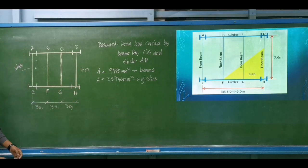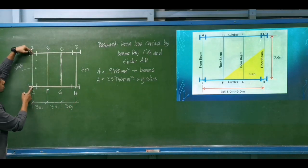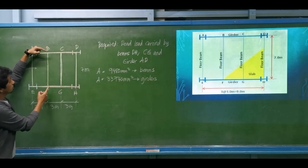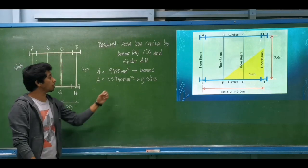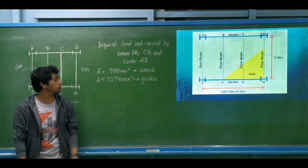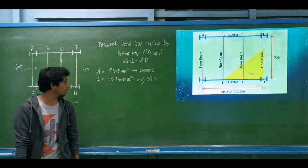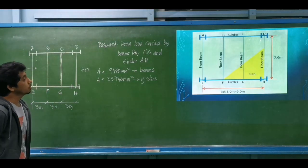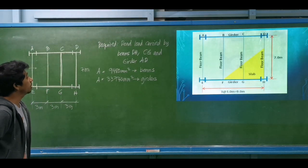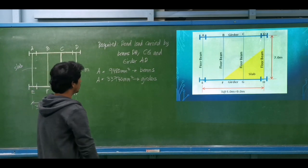Note: girder AD is similar to girder EH, and beam AE is the same as beam DH, and beam BF is the same as beam CG. The cross-sectional area of the steel beams is 9,480 square millimeters, and the girders is 33,740 square millimeters. We need to compute the dead load carried by beams DH, CG, and girder AD.